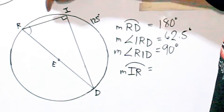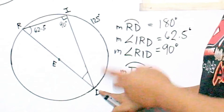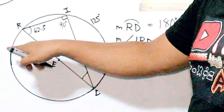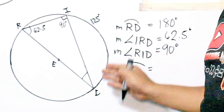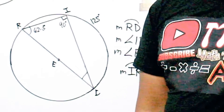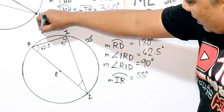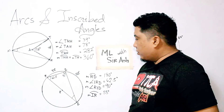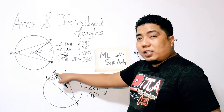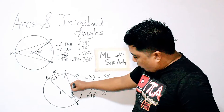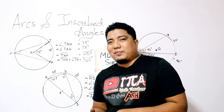For arc RI, since this is a diameter the total is 180 degrees. We already have 125, so 180 minus 125 equals 55 degrees. To get the inscribed angle from that arc, divide by 2: 55 divided by 2 equals 27.5 degrees, because 27.5 times 2 equals 55.